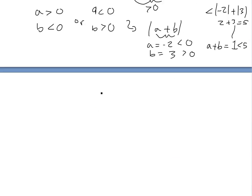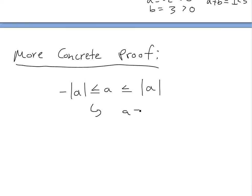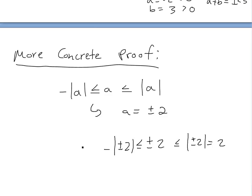Now for a more concrete proof. First notice that for any real number A, we have A less than or equal to the absolute value of A, and A greater than or equal to the negative of the absolute value of A. For example, plus or minus two is less than or equal to the absolute value of two, which is two, and greater than or equal to negative two.